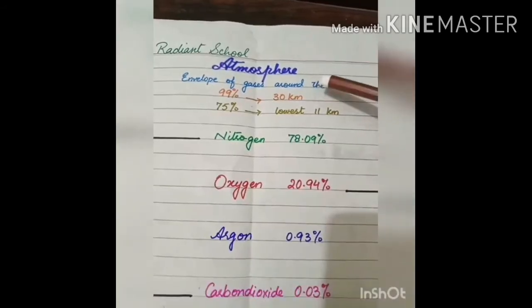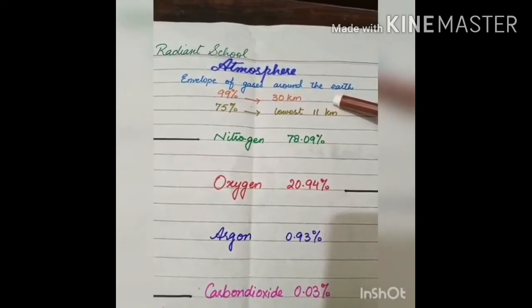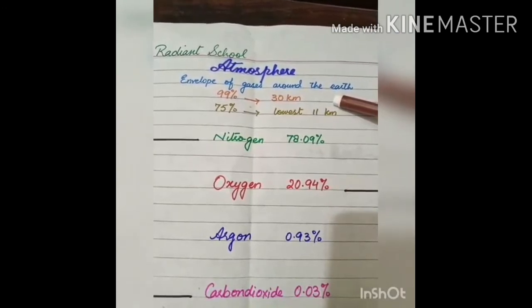Atmosphere is the envelope of different gases around the earth. It extends from the surface of the earth without ending boundary.